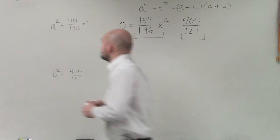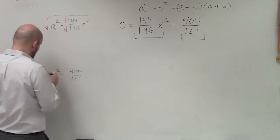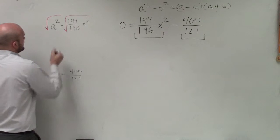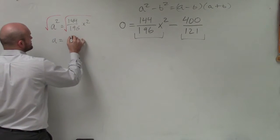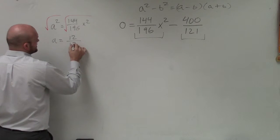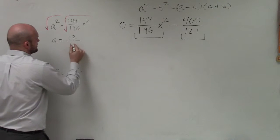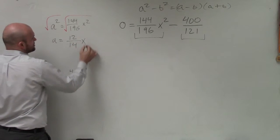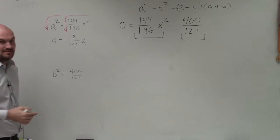So to do that, I'm going to solve for a and for b. So I'll take the square root on both sides. And therefore, I now have a equals the square root of 144 is 12 divided by the square root of 196, I'm sorry, is going to be 14, not 13. And the square root of x squared is just going to be x. Therefore, I can now say a equals 12 over 14 times x.